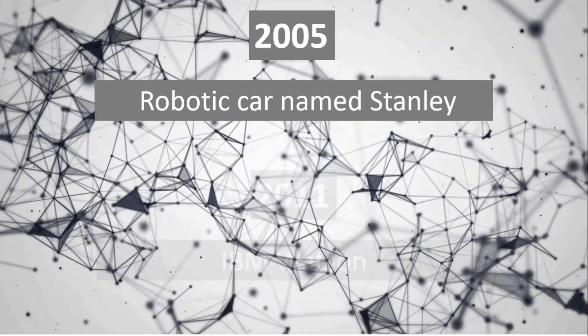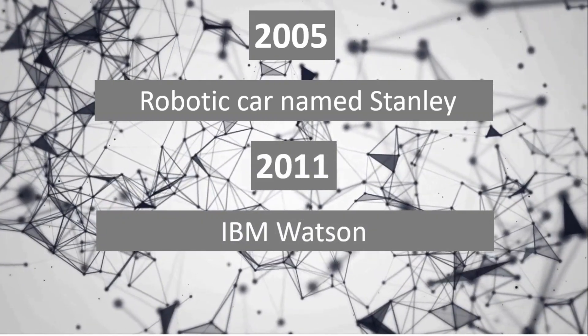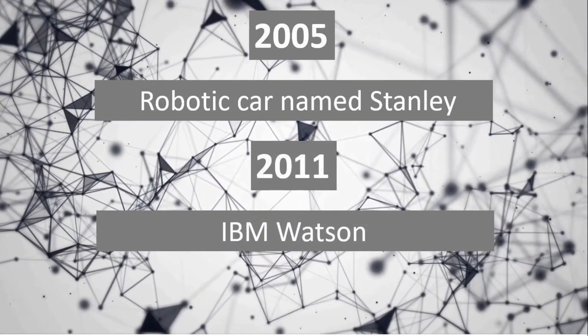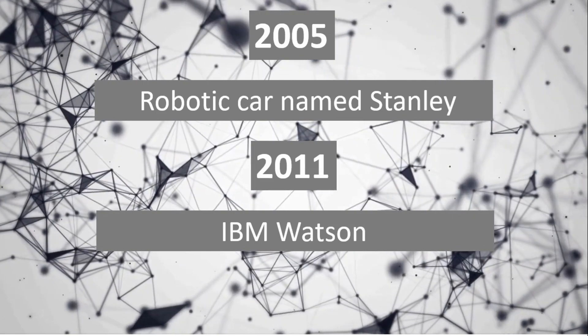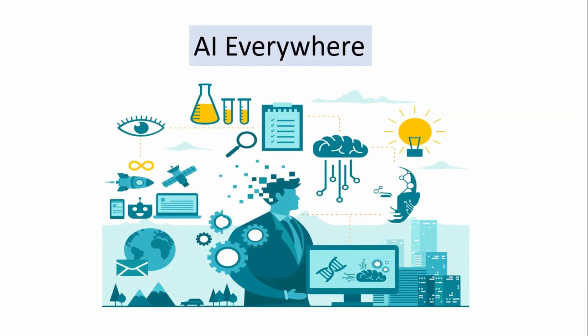In 2011, IBM's question-answering system Watson defeated two great Jeopardy champions, Brad Rutter and Ken Jennings. This is how AI evolved — starting as a hypothetical situation and becoming the most important technology in today's world. If you look around, everything around us is run through AI, machine learning, and deep learning.